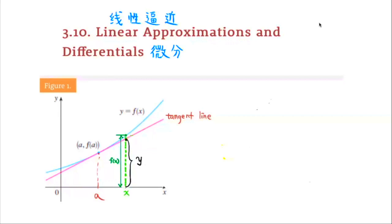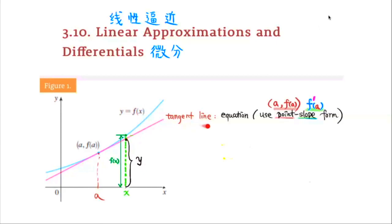So what is an equation of this tangent line? To write the equation of the tangent line, we need a point and the slope. We already have one point. The slope of the tangent line corresponds to the derivative of the function at a. So we can write the equation of this tangent line using point-slope form, with the point being (a, f(a)) and the slope being f'(a).